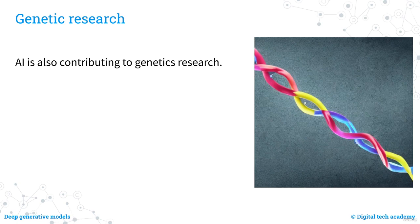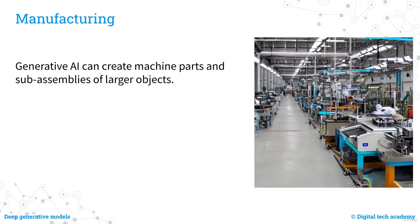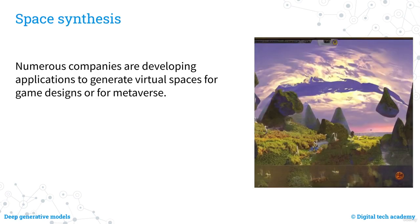AI is also contributing to genetics research. Geneticists are learning to understand gene expression — how specific genes and combinations of genes get turned on and off, and what genes do when they are active. AI is also helping researchers predict how gene expression will change in response to specific genetic changes, showing enormous promise for the development of gene therapies. Additionally, generative AI can be used to design machine parts and sub-assemblies, optimizing for minimizing materials waste, using fewer parts, and increasing production speed.